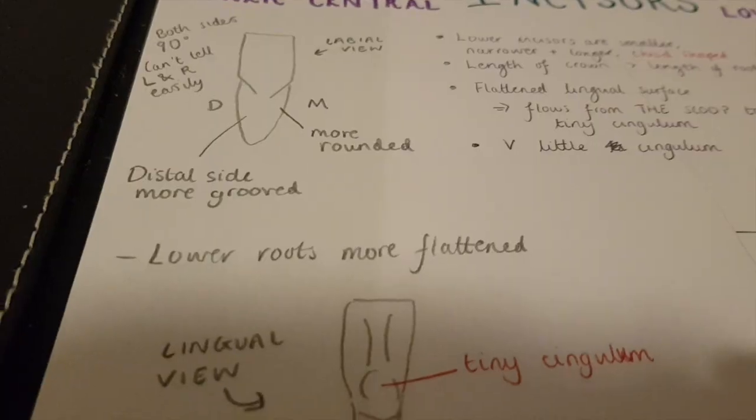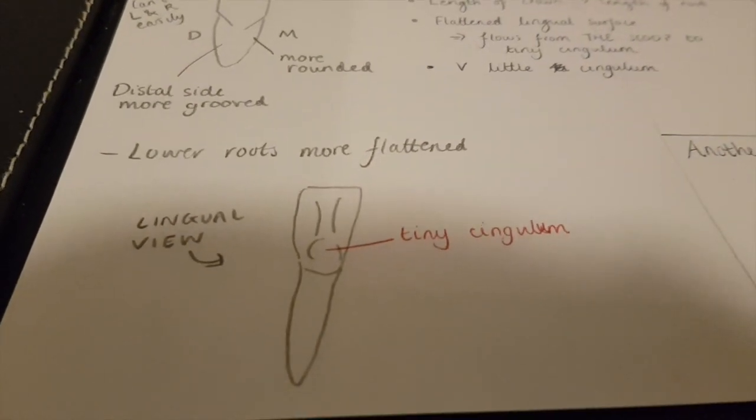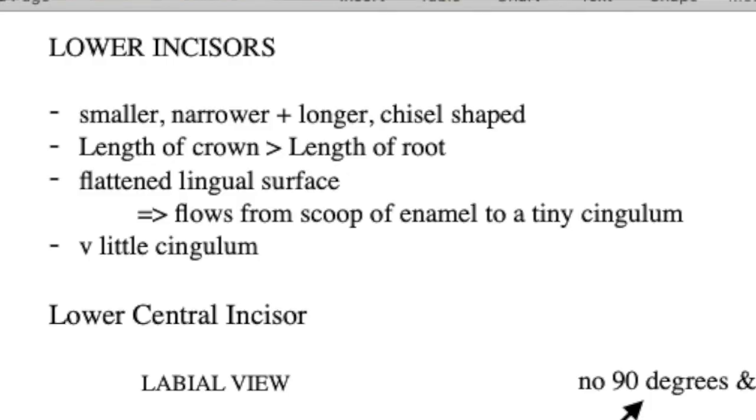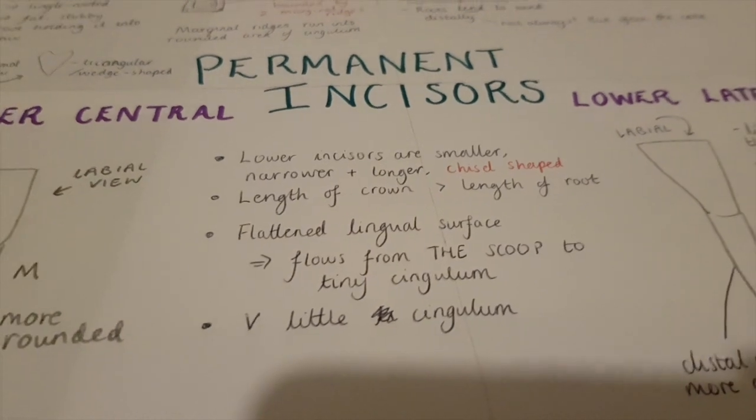That root distinction is true for the lower lateral incisor as well. These roots are generally more flattened. Viewing the tooth lingually, we can see a much smaller cingulum than in the uppers, and again it has the scoop area. But more obvious ways to distinguish lower incisors from uppers: they don't have the large labial surface and spade-like shape. Instead, lower incisors are chisel-shaped — a lot smaller, narrower, and longer than the uppers. The length of the crown actually exceeds the length of the root. The flattened lingual surface flows from the scoop to the tiny cingulum.